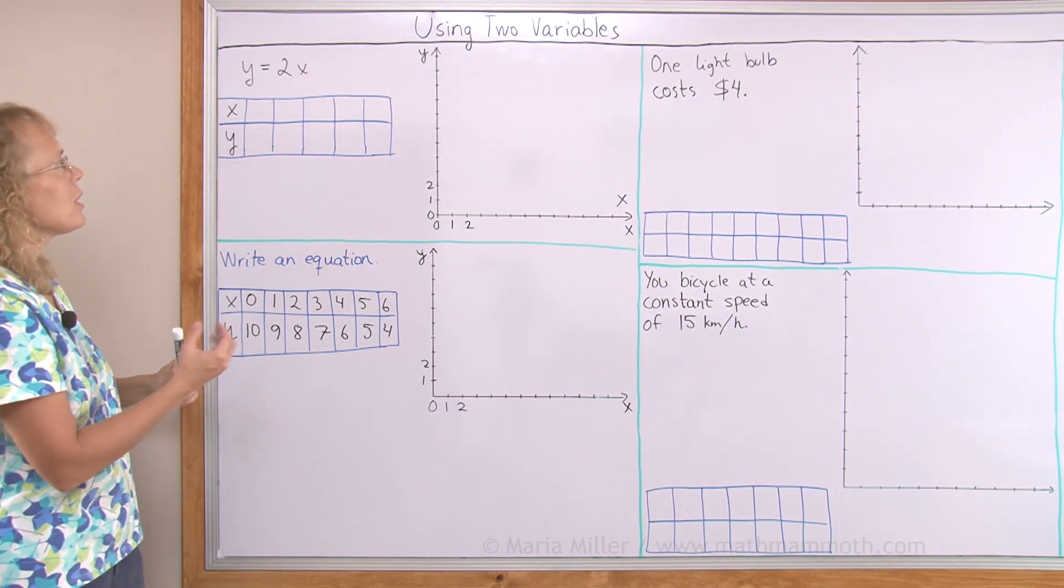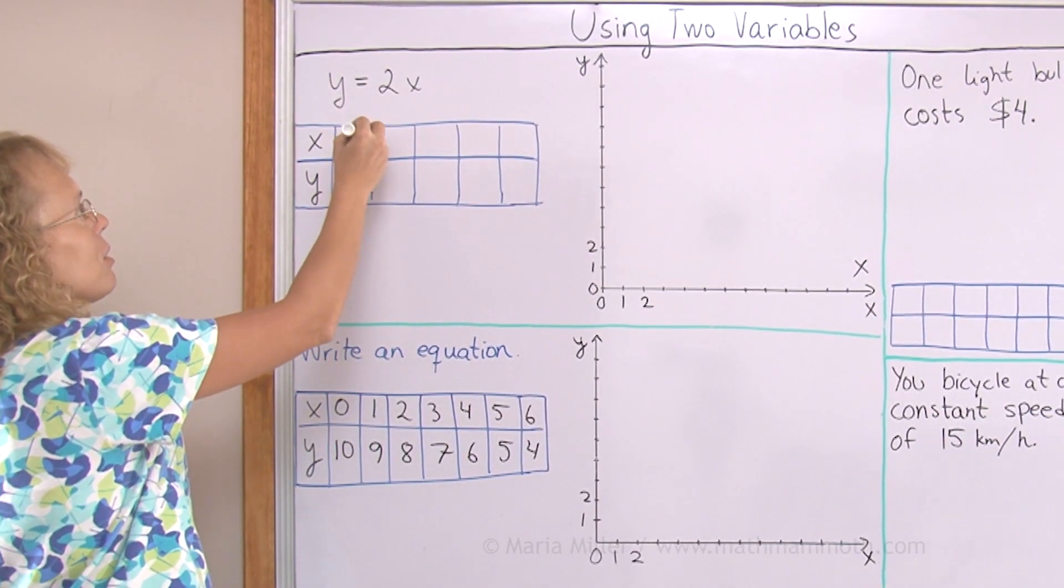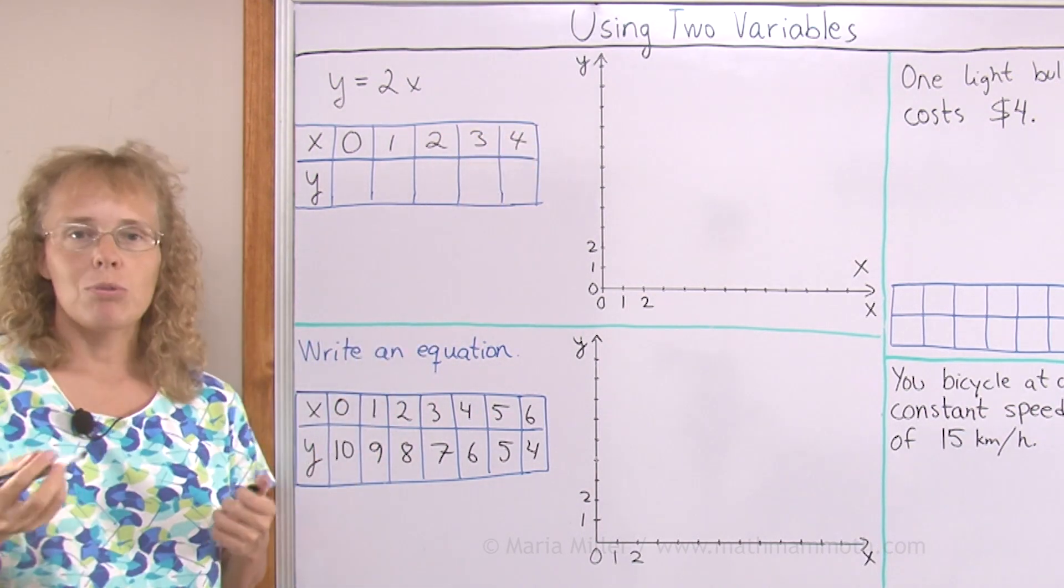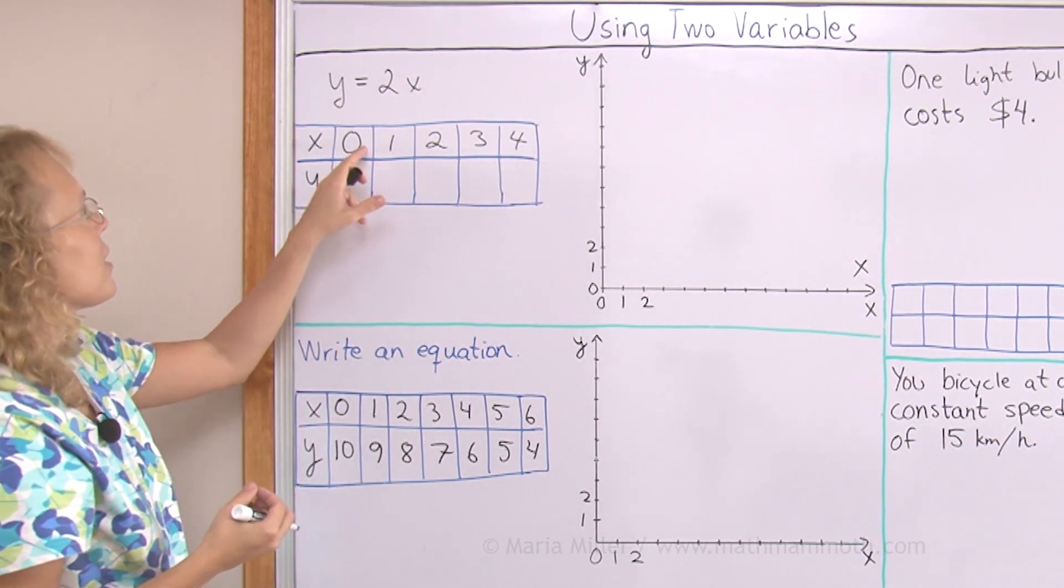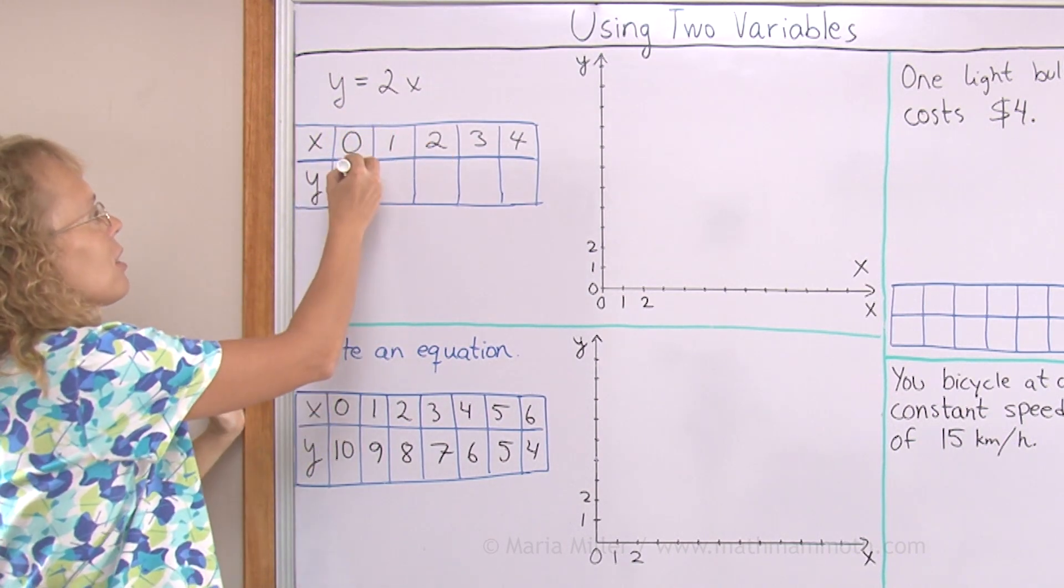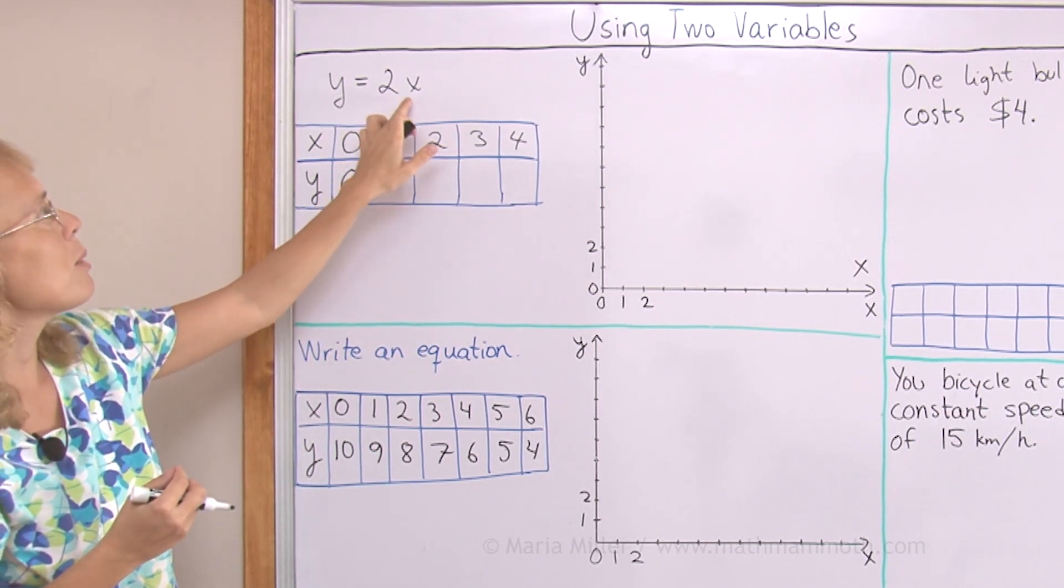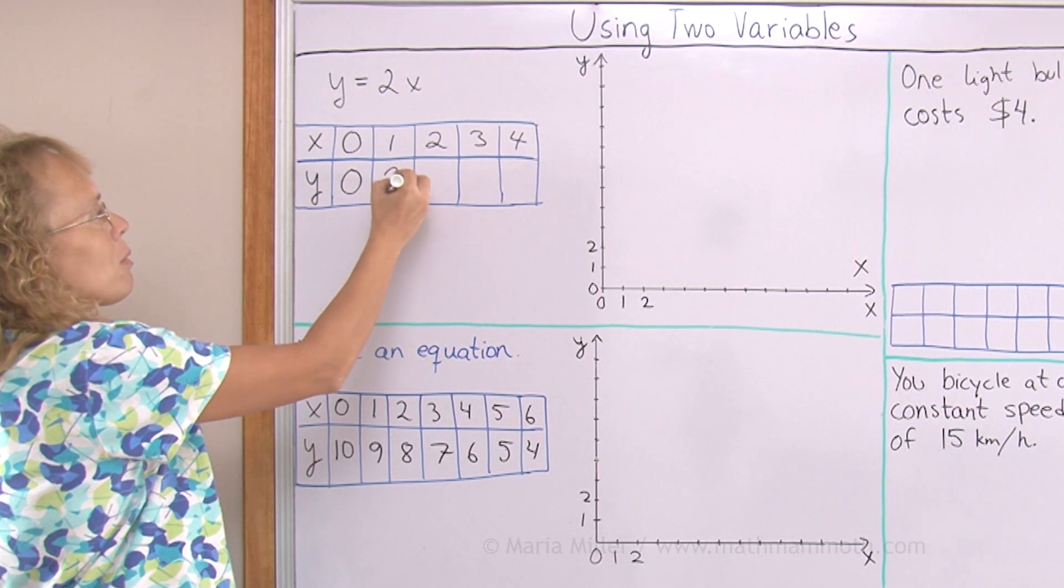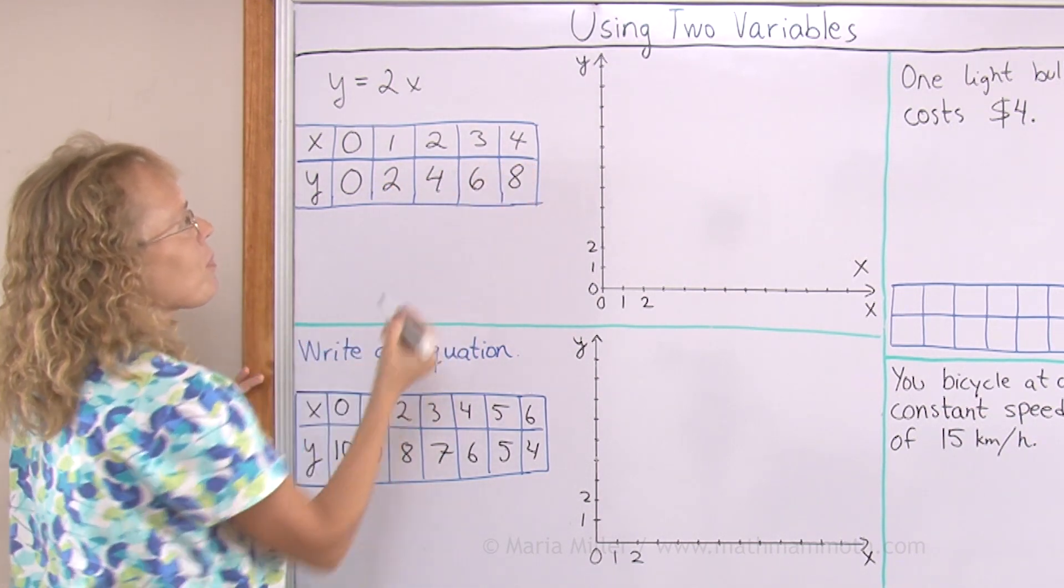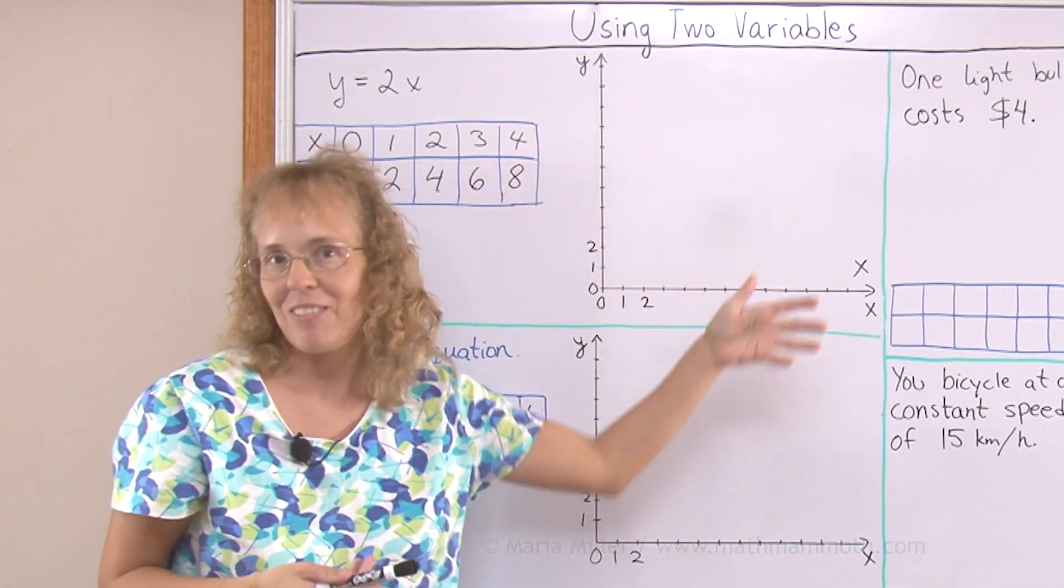So what I do is I will give x some values. If x was 0 or if x was 1 or 2 or 3 or 4 then I will check what y would be. If x is 0 then y equals 2 times 0 which is 0. If x is 1 then I put 1 here, 2 times 1 and y equals 2. Y is always double x. It's a very simple relationship. And I could continue this table forever I guess.